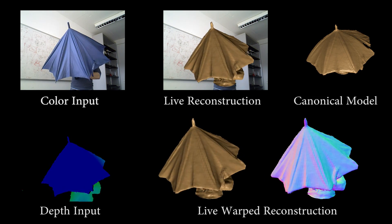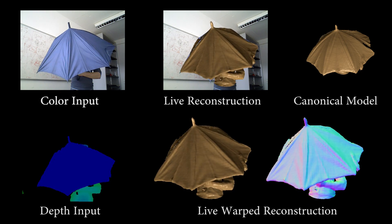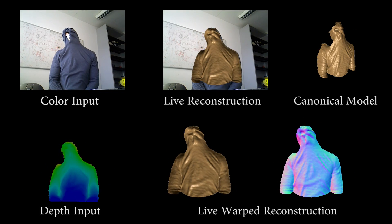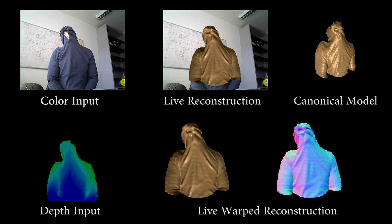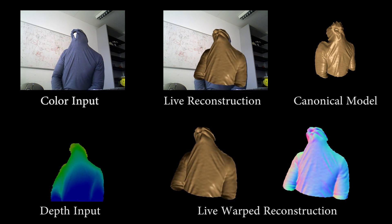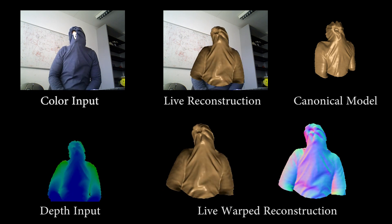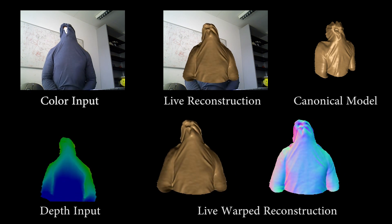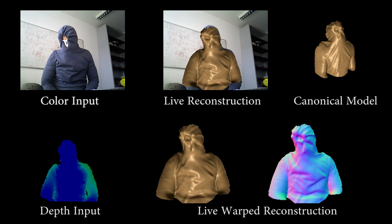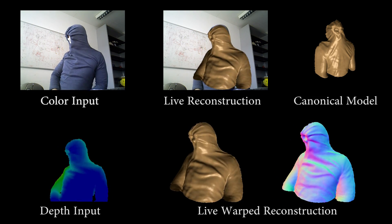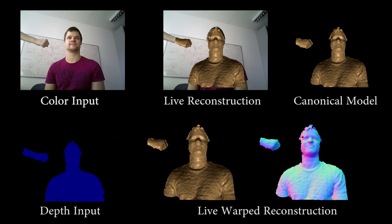Alignment is based on dense depth correspondences and sparse SIFT feature matches. Given the depth and color correspondences, we use a variational optimization approach to find the best alignment. We employ a data-parallel GPU solver to optimize the deformation field at real-time frame rates.